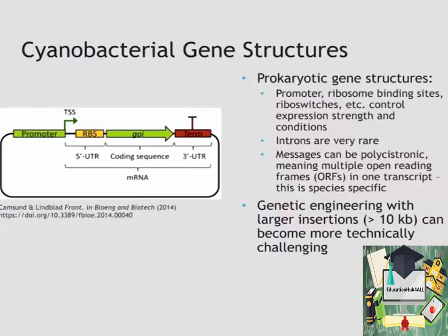Often in cyanobacteria, the messages are polycistronic, meaning we have operons of multiple open reading frames all being transcribed and made into proteins from the same transcript produced by RNA polymerase from DNA. This is species specific — some species have lots of operons and some are more shuffled and don't have as many. These are again things we need to consider when manipulating our cells.